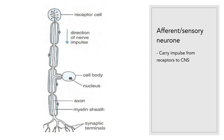Afferent or sensory neuron. Its function is to carry impulses from a receptor to the central nervous system, or CNS, which includes the brain and spinal cord.